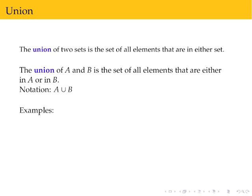Some examples. If we have the set ABC union one, two, three, that is everything that is in either set: ABC one, two, three.